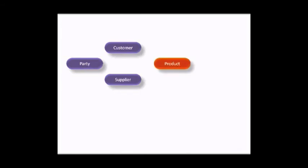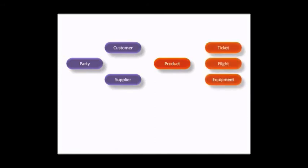Based on this high-level inspection, let's review the data concepts that might be candidates as potential master data objects. We have customer and supplier, both of which are types of parties. The customer purchases a product from the supplier, which is related to a ticket for a flight on a specific piece of equipment. The product is associated with a set of locations and is good for travel at a specific time.